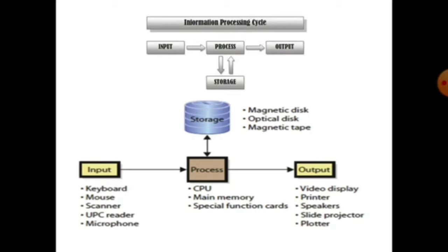You can see here examples: keyboard, mouse, scanner, UPC reader, microphone. These all are parts of computer which are externally connected and used to give command or instruction to the computer. So next is output device.